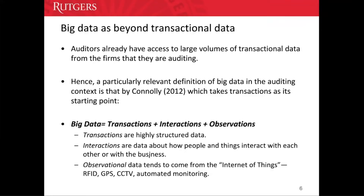Interaction data is about how people and things interact with each other or with the business. One example is customer relationship management — you can collect emails and chats related to customers. If a company has a Twitter account, interactions with customers via tweets are also interaction data. Some companies use social media analytics to predict customer sentiment — whether customers are leaving positive or negative reviews.